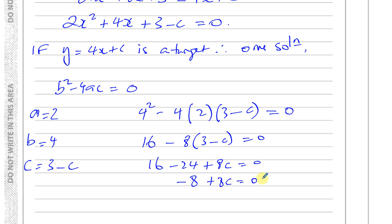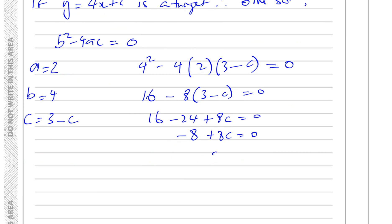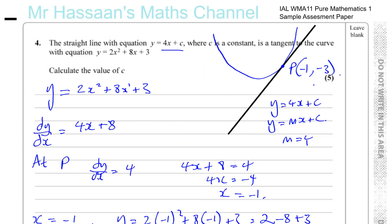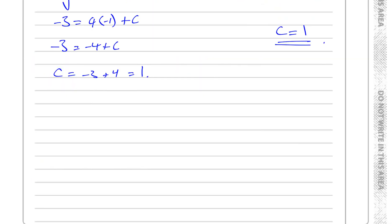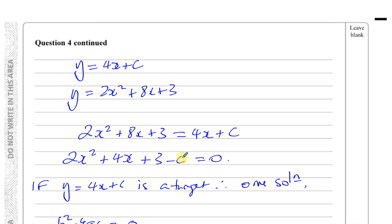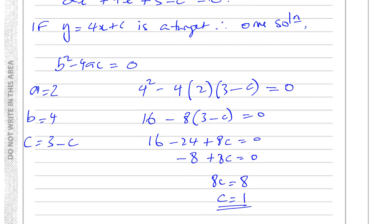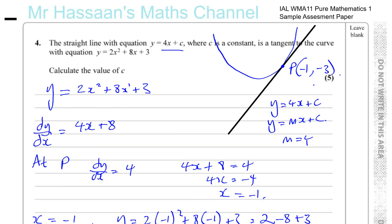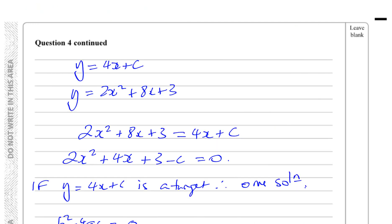This simplifies to minus 8 plus 8c equals 0, so 8c equals 8, giving c equals 1 — the same answer as before. Both methods work equally well. If the curve were a cubic rather than a quadratic, the second method would be more complicated. Either way, c equals 1 is the answer to question four from the sample assessment paper for P1.